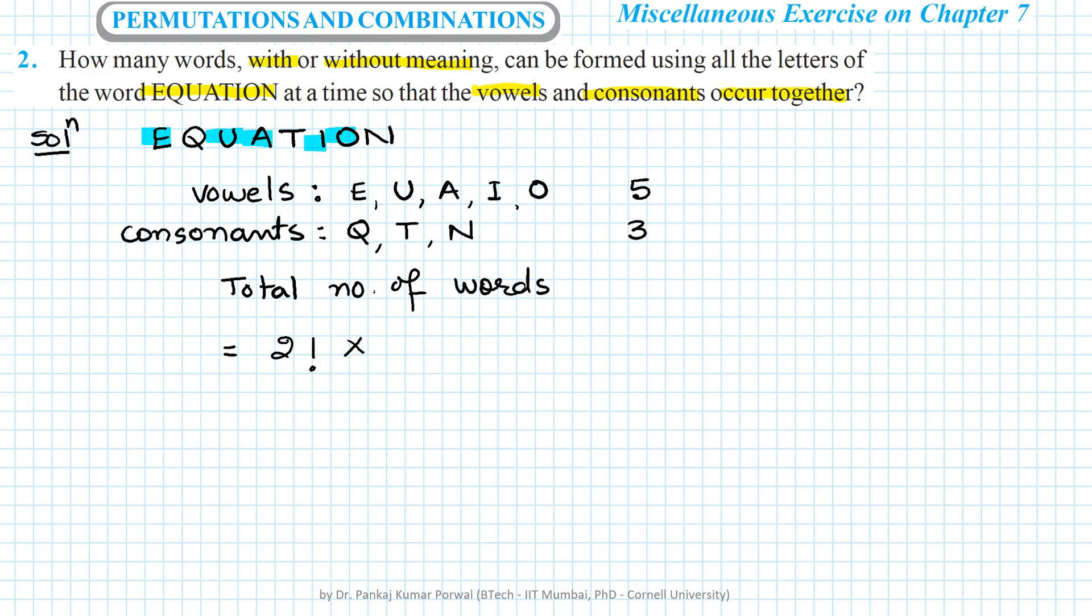We have total 5 vowels, so the number of ways of arranging 5 distinct objects will be 5 factorial and again multiplication. Number of ways of arranging 3 distinct letters will be 3 factorial.